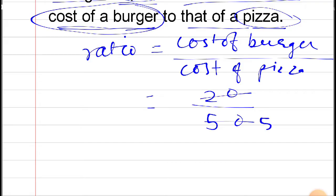And so if you divide 50 by 10, we'll get 5. If we divide 20 by 10, we'll get 2. So the ratio of cost of burger to the pizza is 2 by 5.